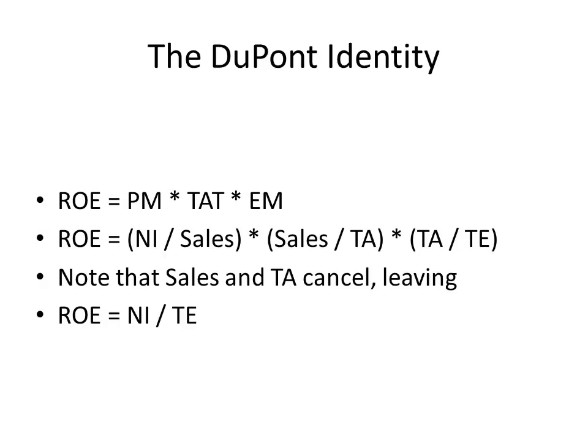Here we have the DuPont identity. It's simply: return on equity equals profit margin times total asset turnover times equity multiplier. We can break those down by writing in their formulae: profit margin is net income over sales; total asset turnover is sales over total assets; and equity multiplier is total assets divided by total equity. Notice that sales cancel out, as do total assets, leaving us with net income over total equity — once again, simply our formula for ROE.